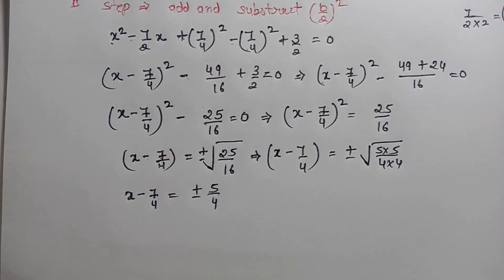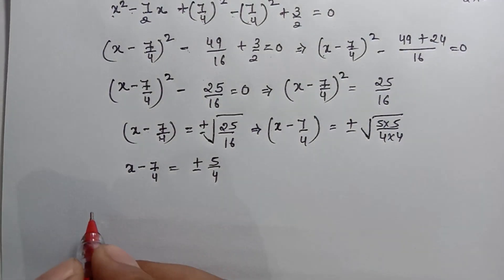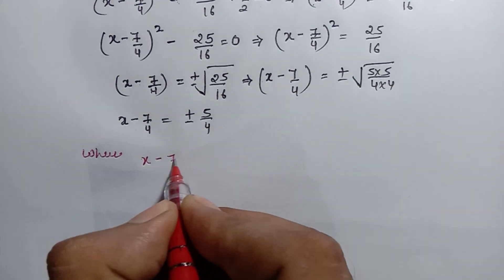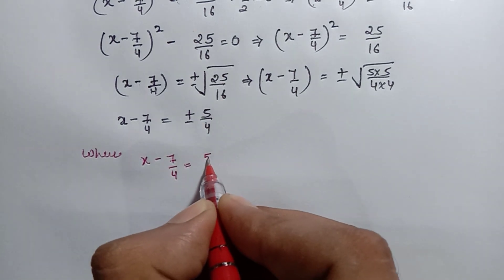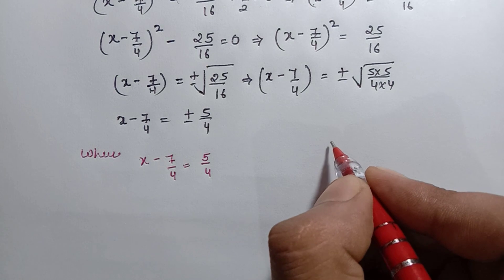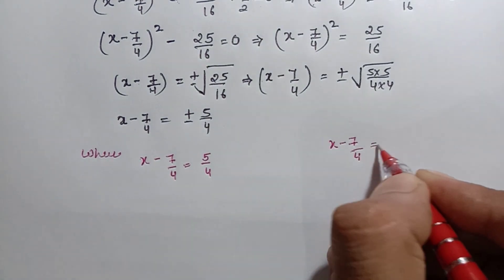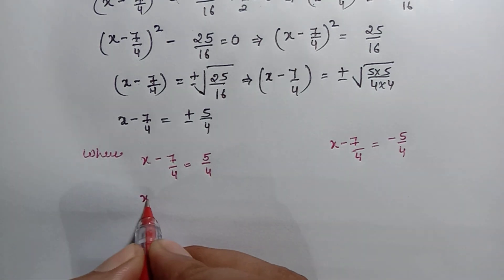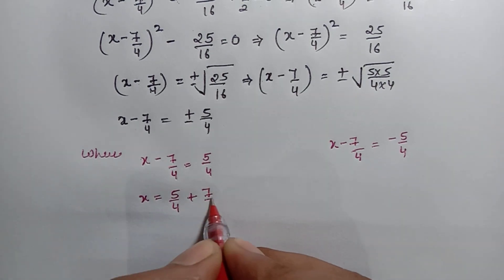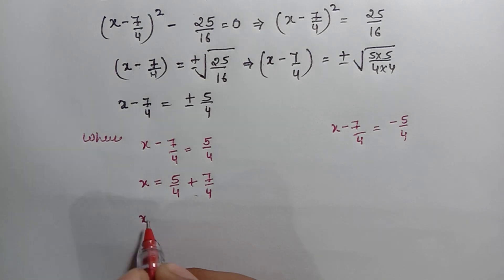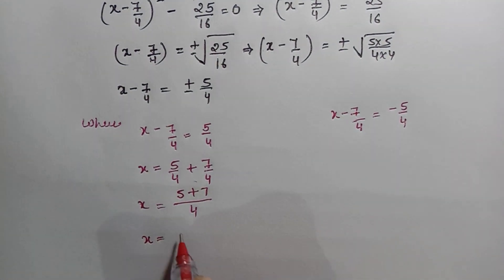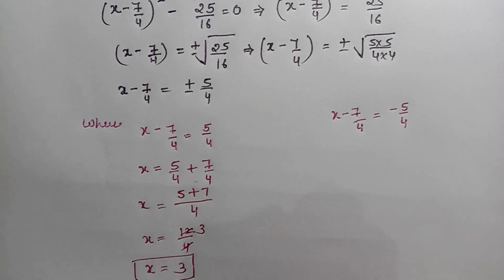हमें roots find करने हैं, तो इसे एक बार positive और एक बार negative के साथ solve करेंगे। When x minus 7 by 4 equals to positive 5 by 4: minus 7 by 4 another side पर जाएगा तो positive हो जाएगा। x equals to 5 by 4 plus 7 by 4, दोनों के denominator same हैं, तो 5 plus 7 equals to 12 by 4, x equals to 3।